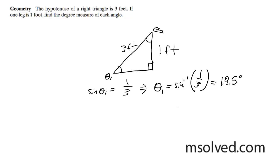You can go ahead and use other trig functions, but since this is just a right triangle, I'm going to take 180 minus 90 minus 19.5. That gives me the other angle, theta 2, which equals 70.5 degrees.